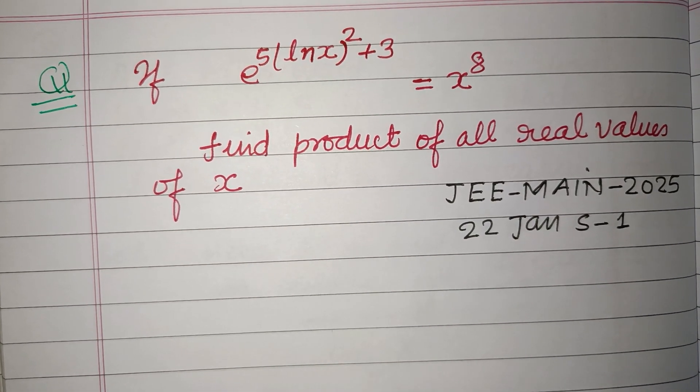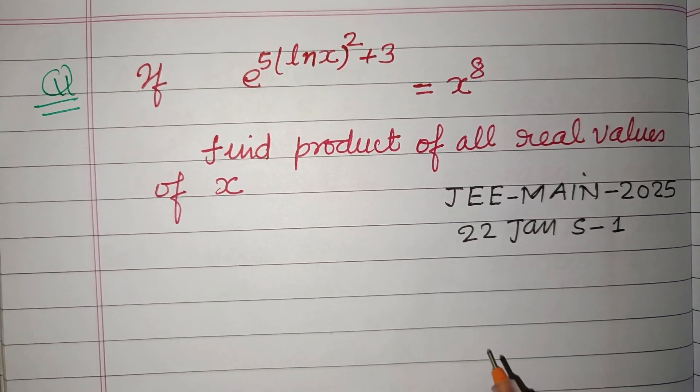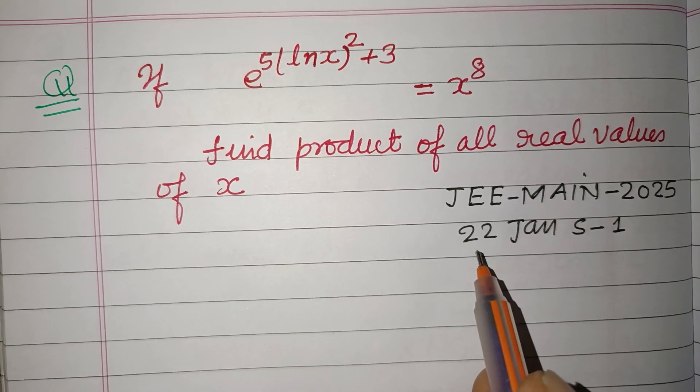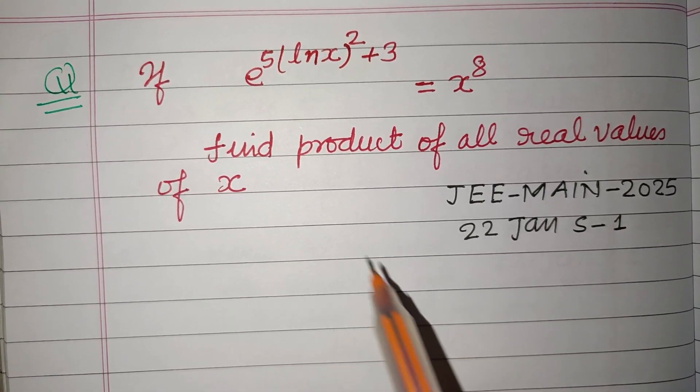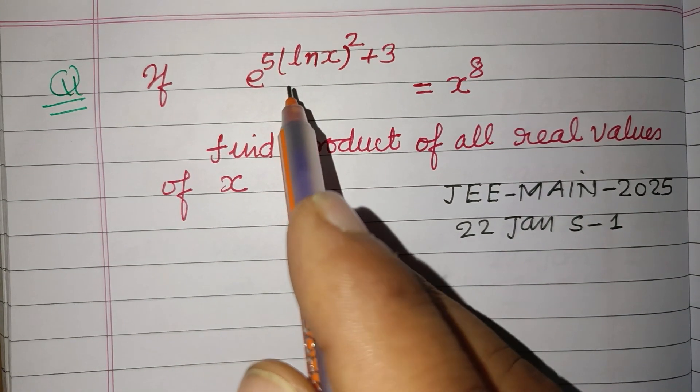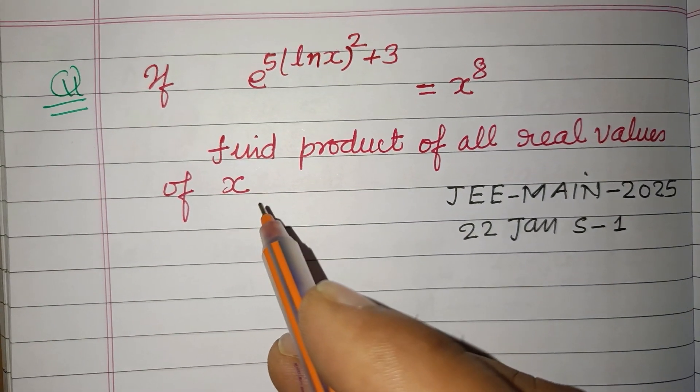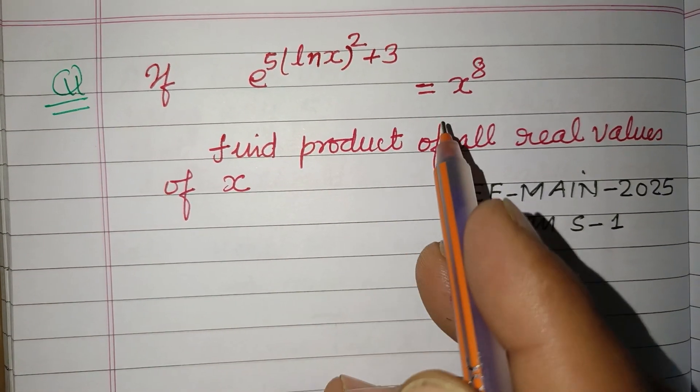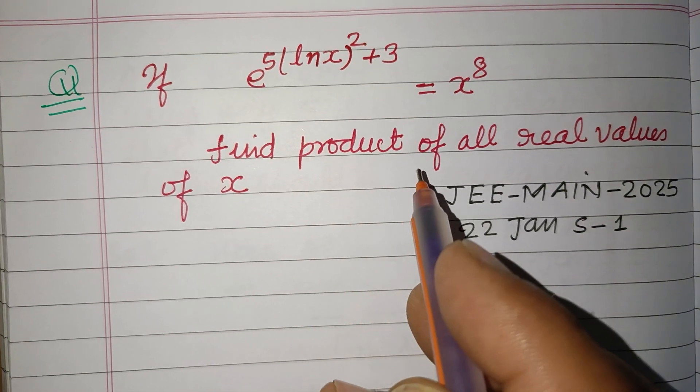Hello viewers, warm welcome to this YouTube channel. This is a question from JEE Main 2025, 22nd January shift 1. If e to the power 5 times ln x squared plus 3 equals x to the power 8, find the product of all real values of x.